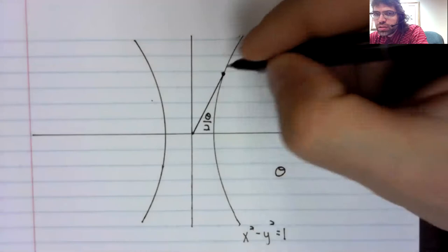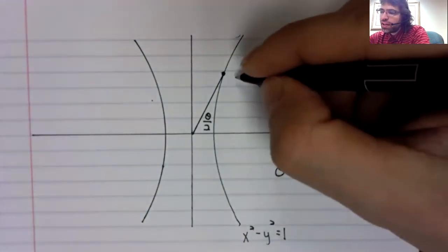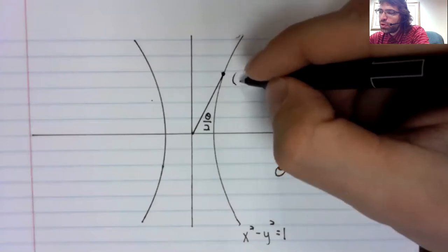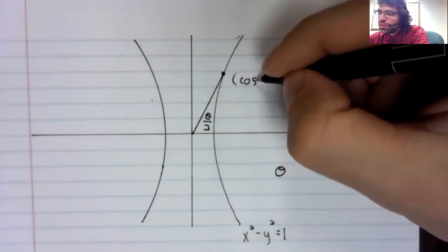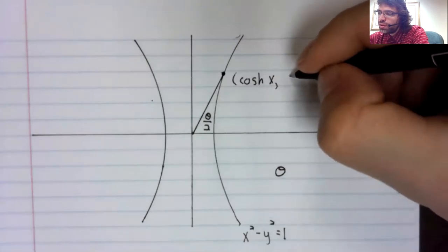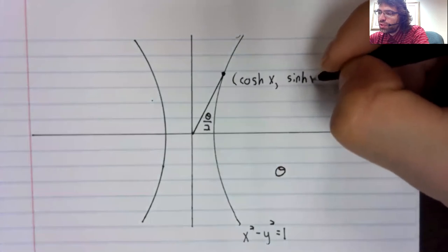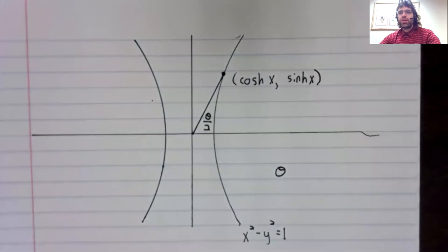And what is this point where the line segment hits the hyperbola? Well, you can probably guess it's the hyperbolic cosine, comma, the hyperbolic sine.